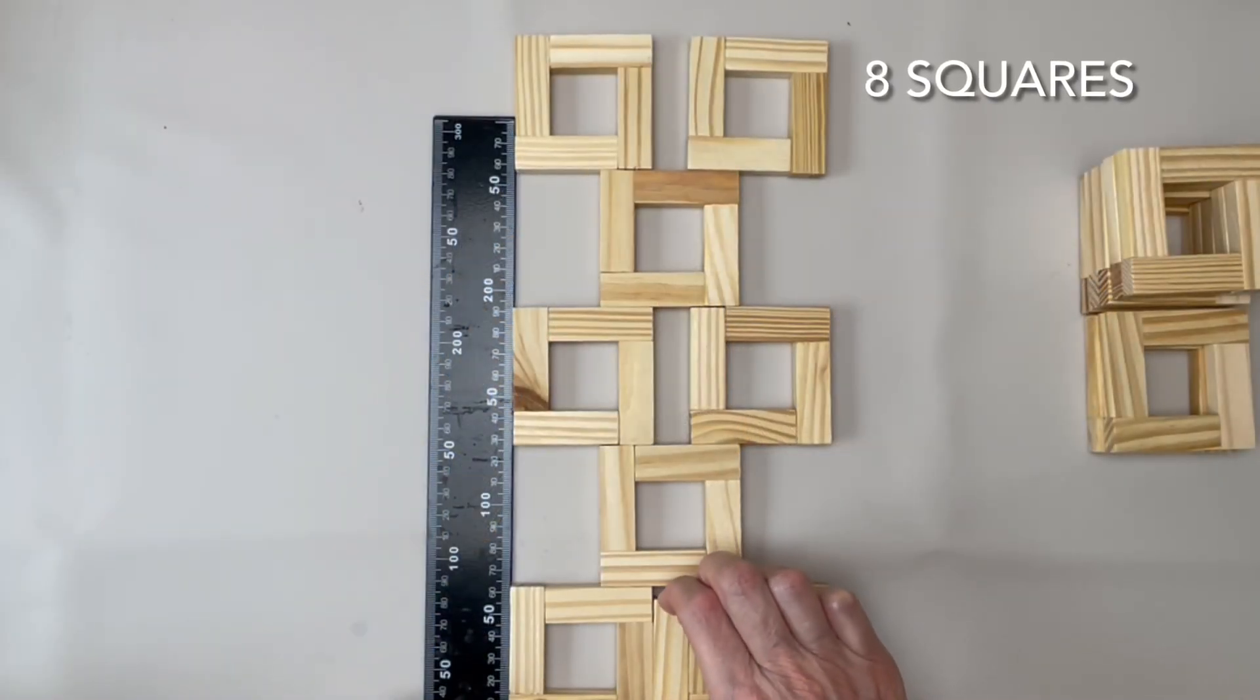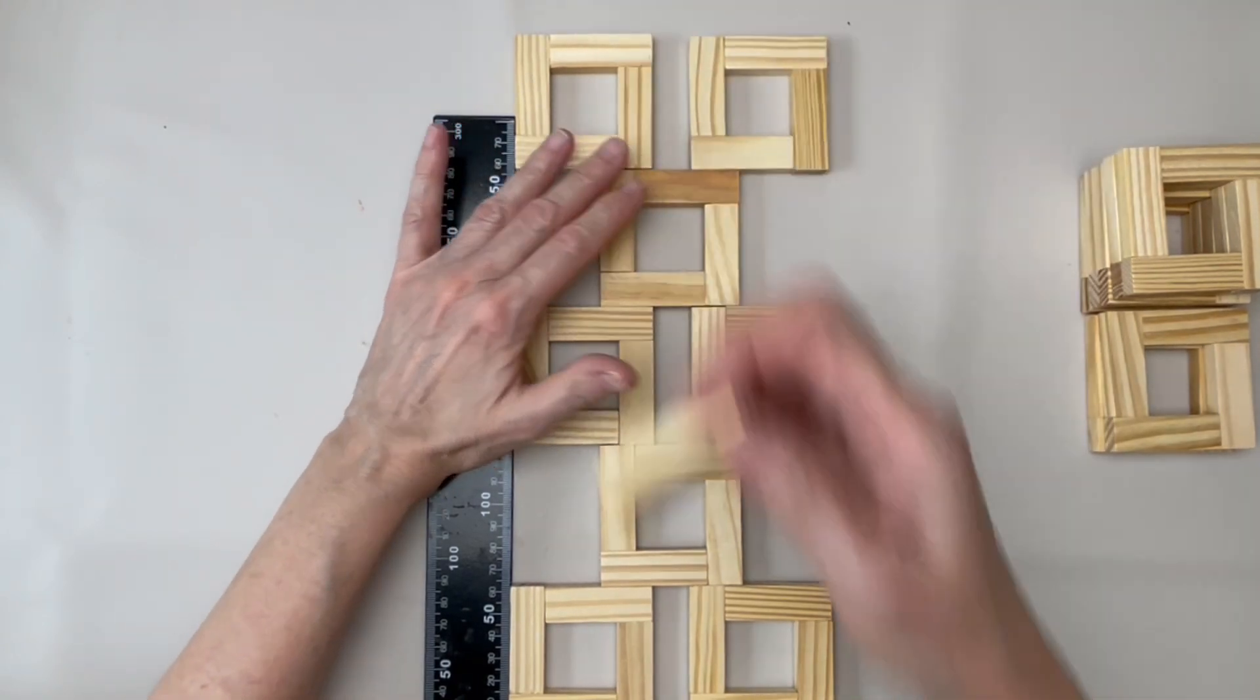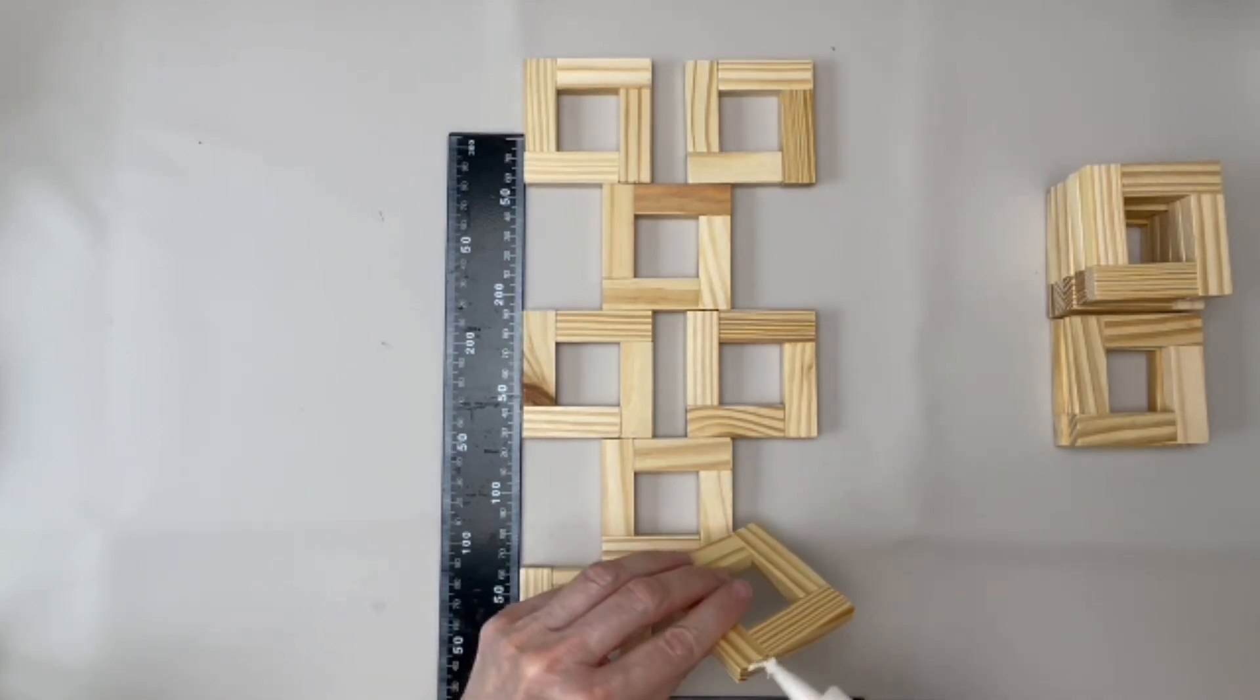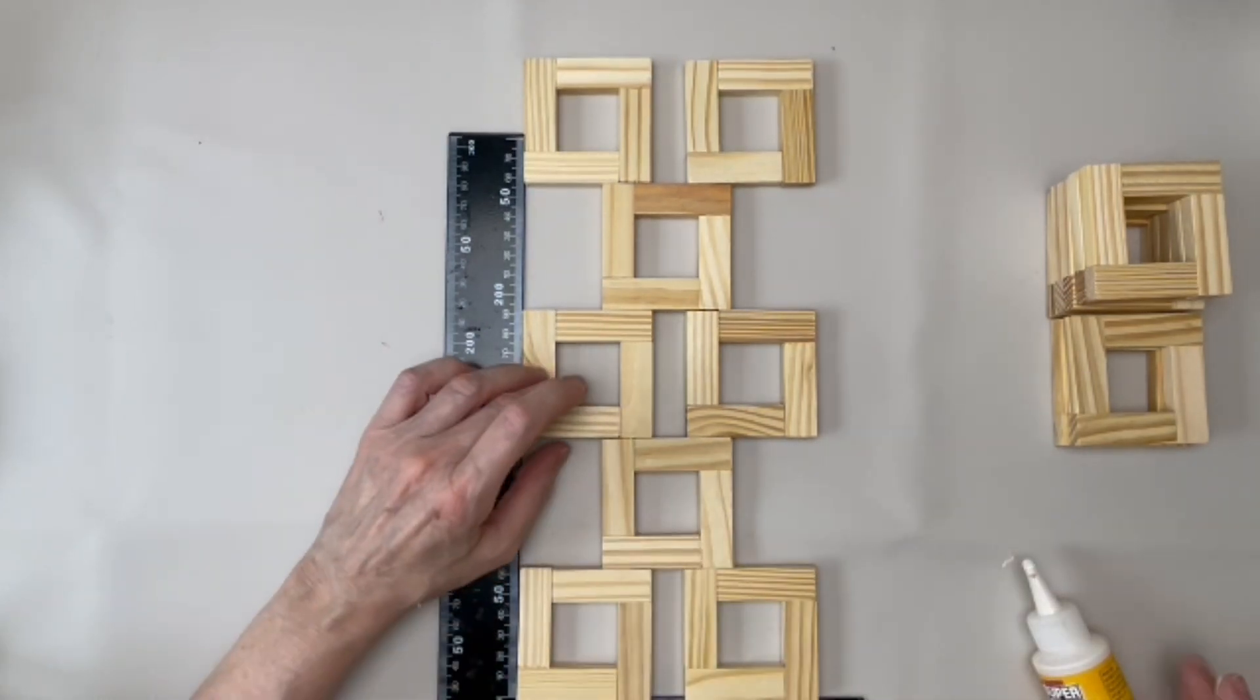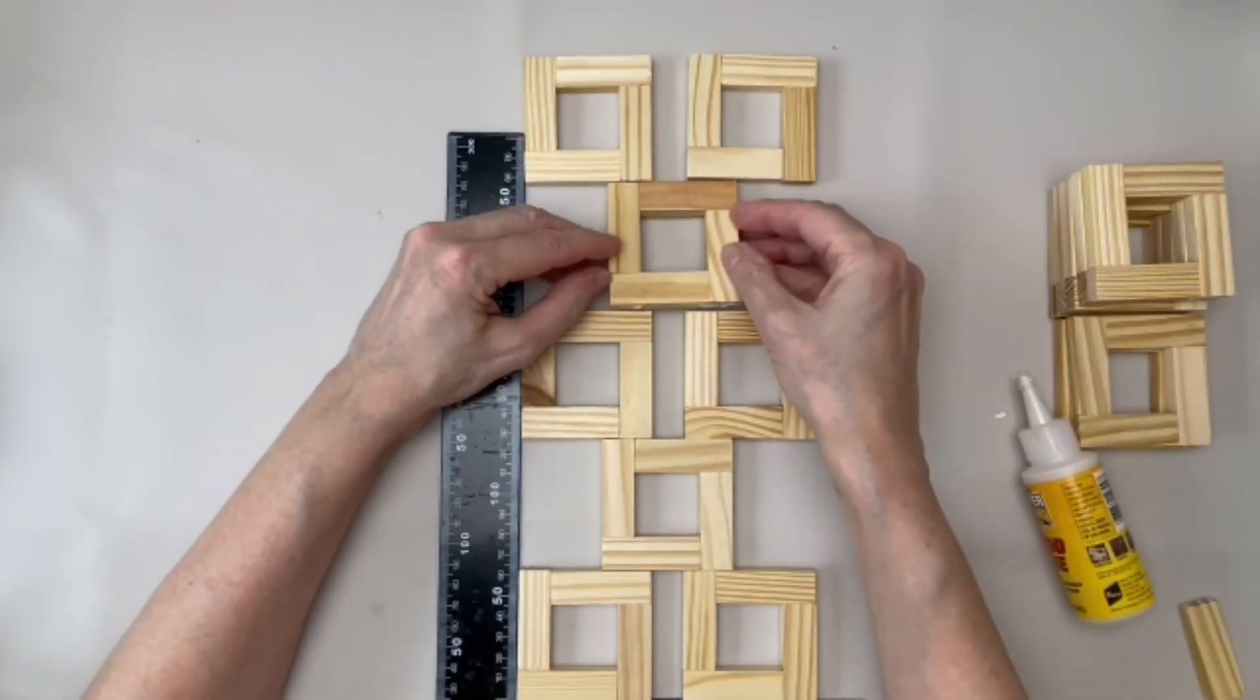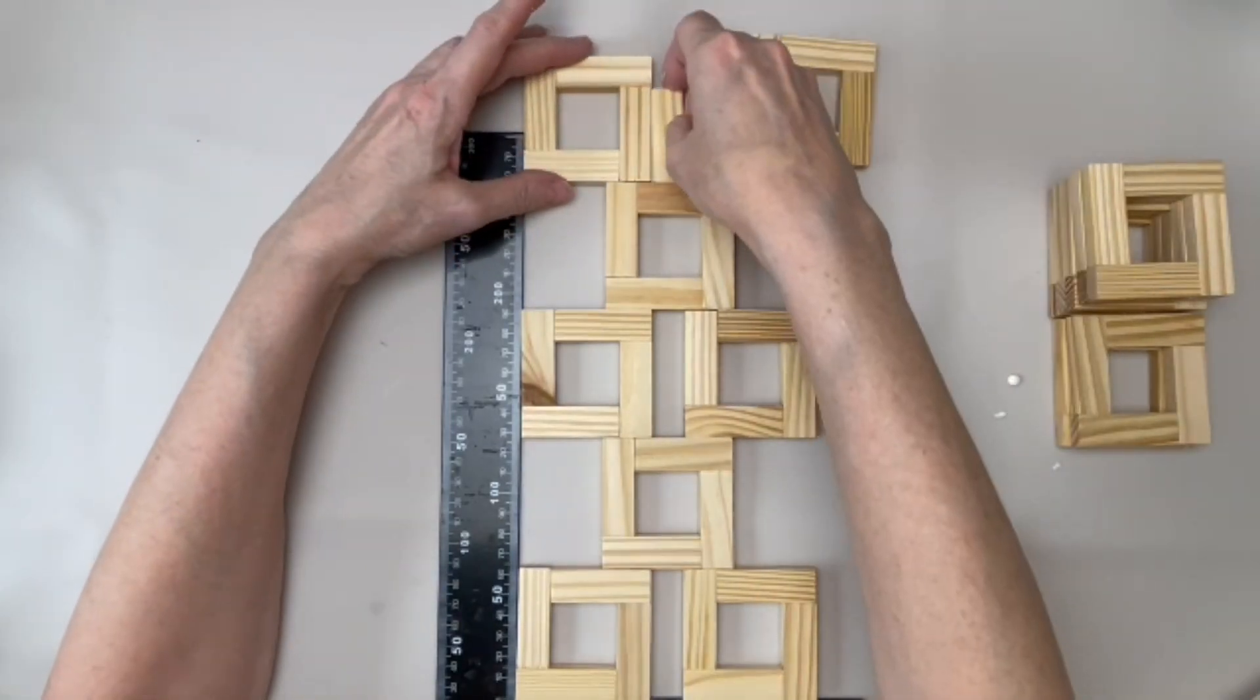For the first side, we'll be placing eight squares in this pattern. I determined the spacing with the block, but we will be checking that with a square as well. Glue the blocks together as you see on screen. Again, be sure that the blocks are all going in the same direction. Make sure both sides are square, that they line up perfectly so that the sides fit together when you assemble the project.